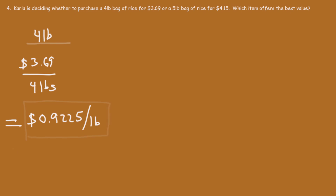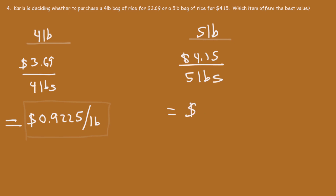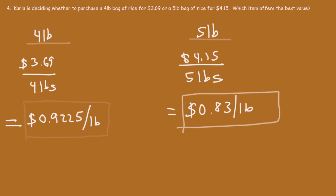Now let's calculate the unit price for the 5-pound bag of rice. The cost is $4.15 divided by 5 pounds, which gives a unit price of 83 cents per pound. Comparing the two: item B has the lowest price per unit, so you're getting more rice at a lower price. Item B offers the best value.